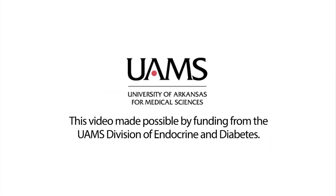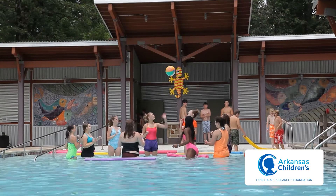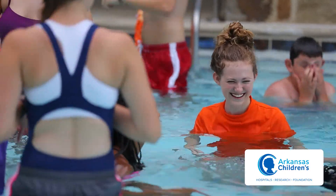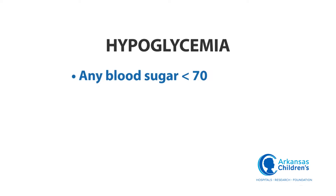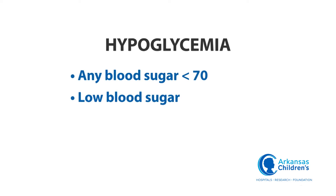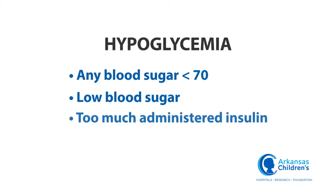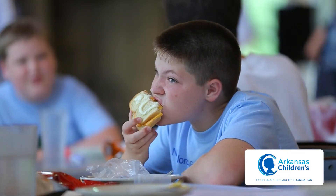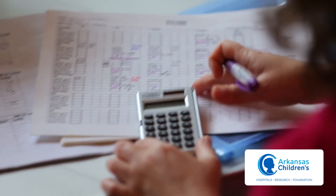In this section, you'll learn about low blood sugars, or what may be called hypoglycemia. Any blood sugar less than 70 is considered to be a low blood sugar or hypoglycemia. This can happen for several reasons, with the most common reason being having too much insulin being administered. This occurs because there was either a mistake in counting carbohydrates or an error in the calculation of the meal insulin dose.